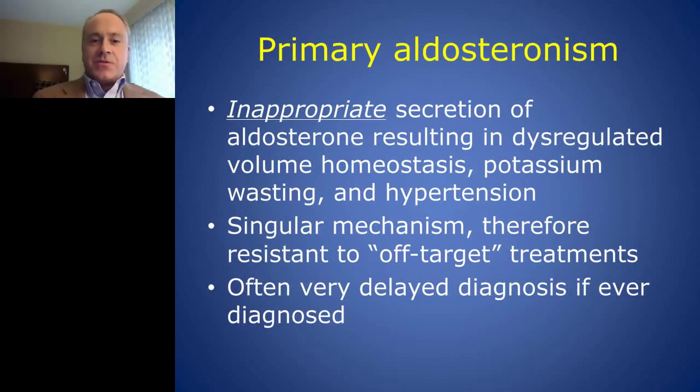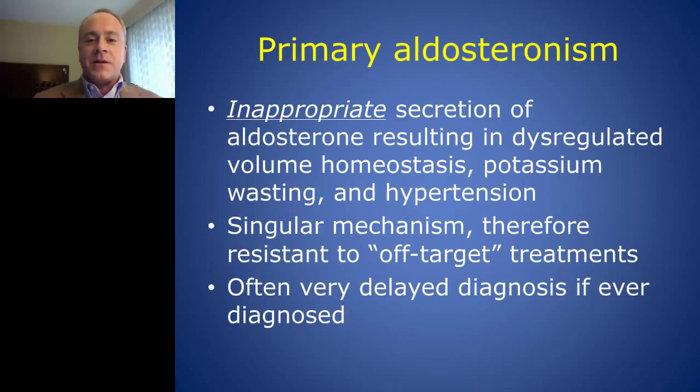Specifically, primary aldosteronism is the inappropriate secretion of aldosterone resulting in dysregulated volume homeostasis, potassium wasting, and hypertension. It is a singular mechanism. Therefore, as we saw in this case, it is typically resistant to off-target treatments. Blood pressure medications that do not specifically target the problem of aldosterone will have very little or limited benefit. Unfortunately, it's a very delayed diagnosis — if it's even diagnosed.